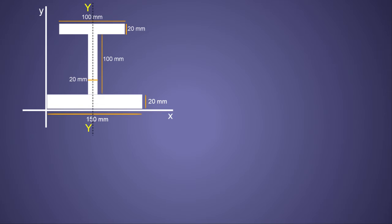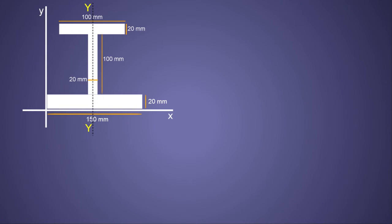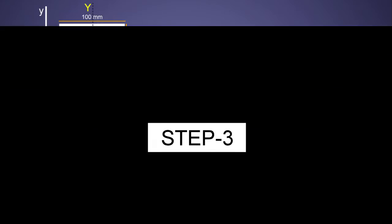In step two, we recognize that components like this are made of simple shapes. This I-section is made of three rectangular blocks. In any problem we need to identify the simple shapes that make up the component, because we know the formulas to find the centroid of simple shapes, and we have a formula to combine those individual centroids to get the centroid of the whole component. We mark the three rectangles as rectangle 1, 2, and 3.